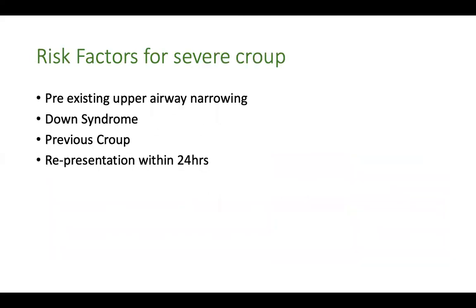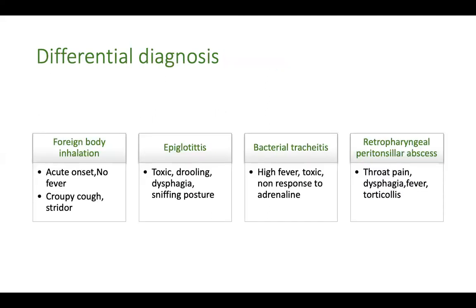What are the risk factors for severe croup? There is a subgroup of children prone to severe croup — for example, anyone with pre-existing upper airway narrowing, babies with Down syndrome, children with a history of previous croup, and re-presentation within 24 hours. That means if a child came with croup symptoms, was given medicines, and comes back with persistent symptoms, there is a higher chance of progressing to severe croup.